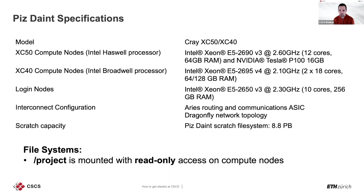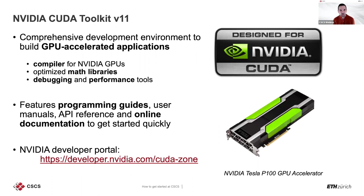The scratch file system features 8.8 petabytes of space. The project file system is mounted read-only on compute nodes — you cannot write simulation output to project from a compute job. As stated, you should use scratch for running jobs and transfer data afterwards. An important thing on the hybrid system is the NVIDIA CUDA toolkit — currently version 11 — providing a comprehensive development environment for GPU-accelerated applications. There is also a PrgEnv-nvidia programming environment with NVIDIA compilers, optimized libraries, and debugging and performance tools.